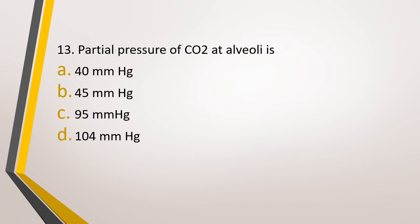Question number 13. Partial pressure of carbon dioxide at alveoli is. Option A: 40 mm of Hg. Option B: 45 mm of Hg. Option C: 95 mm of Hg. Option D: 104 mm of Hg. The correct answer is option A, that is 40 mm of Hg.